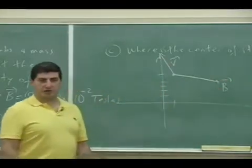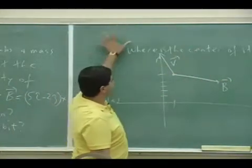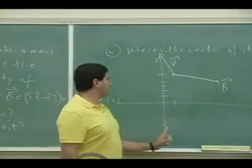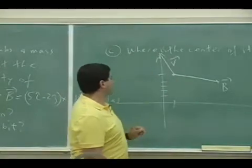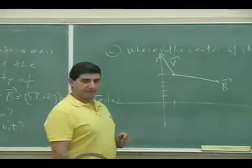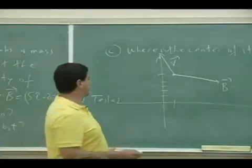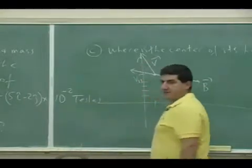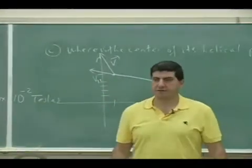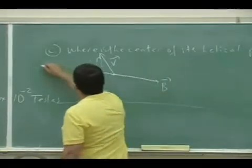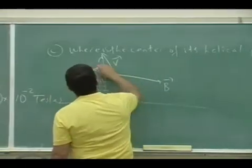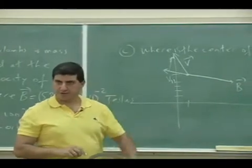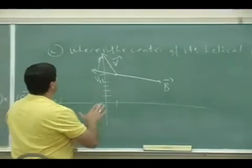And the B field is 5 minus 2. The B field is that way, so all of this space is filled with this B field, and then the particle appears here, and what's going to happen to it. Now, based on what we discussed last time, the parallel component of the V doesn't feel the effect of the B at all. So that part just keeps going. And then the perpendicular component experiences a force that causes it to go in a circle.